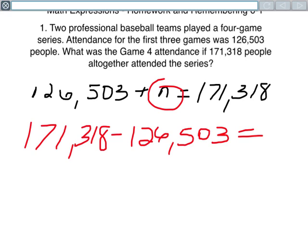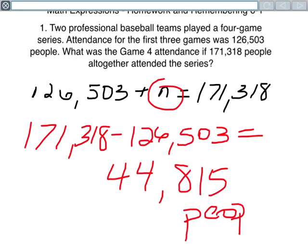And if you do the subtraction here, you get 44,815 people. This is at game four. So 44,815 people showed up to game four.